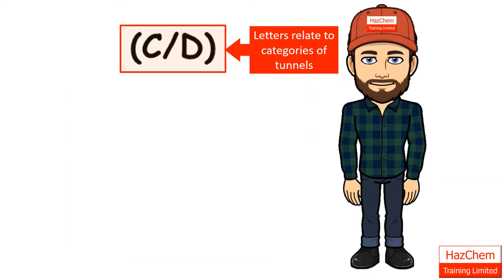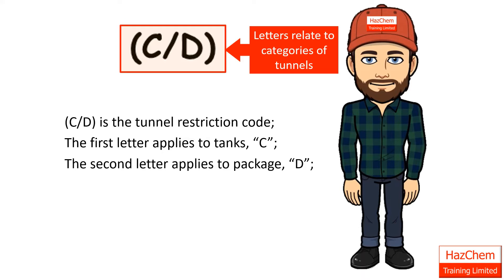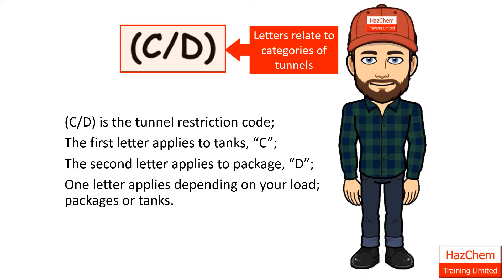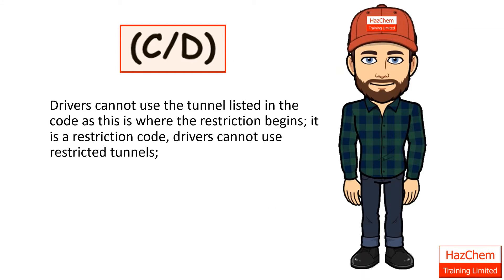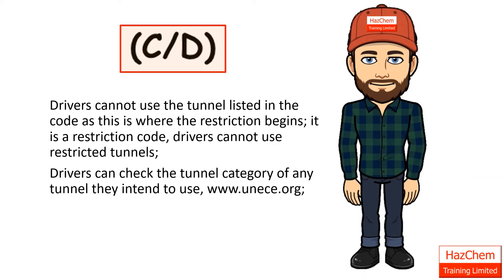These letters relate to categories of tunnels. CD is the tunnel restriction code. The first letter applies to tanks and the second letter applies to packages. One letter applies depending on your load, whether you're carrying packages or pulling a tanker. Drivers cannot use the tunnel listed in the code, as this is where the restriction begins — it is a restriction code. Drivers cannot use restricted tunnels. Drivers can check the category of any tunnel they intend to use at www.unice.org.